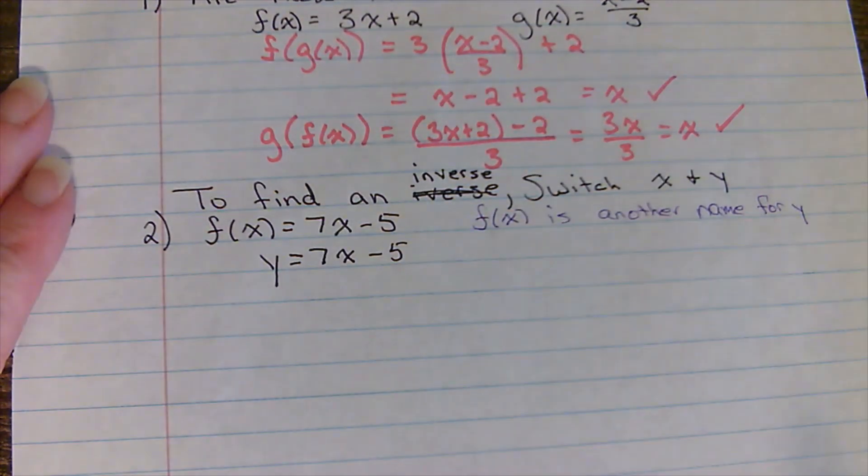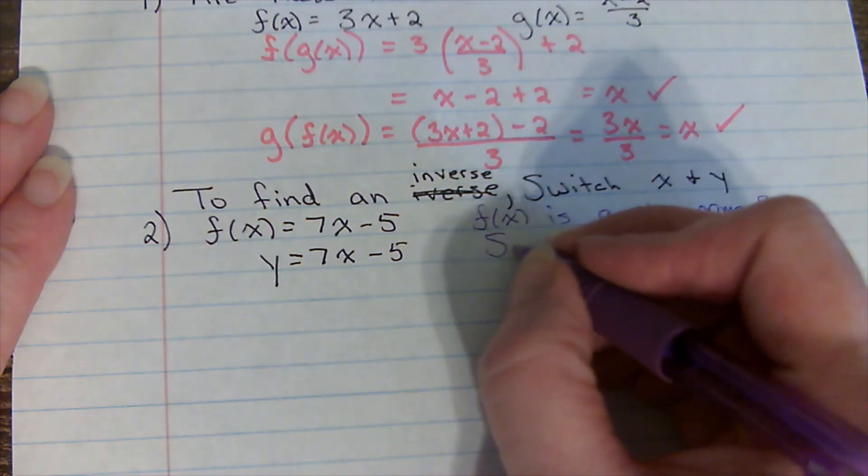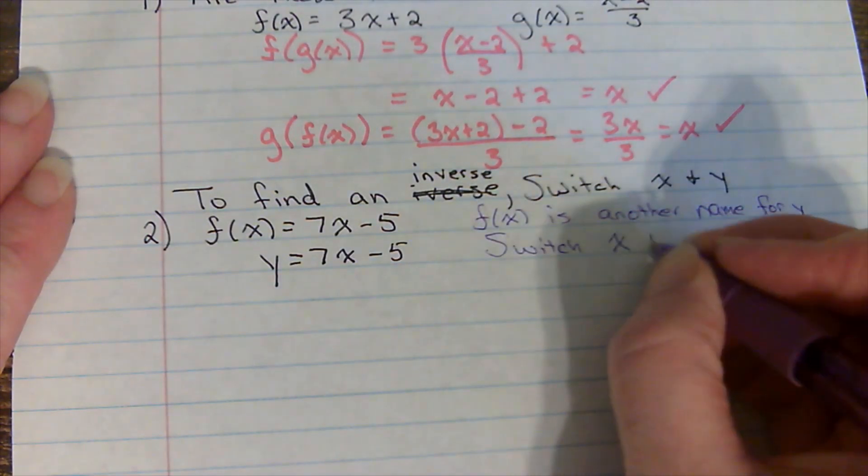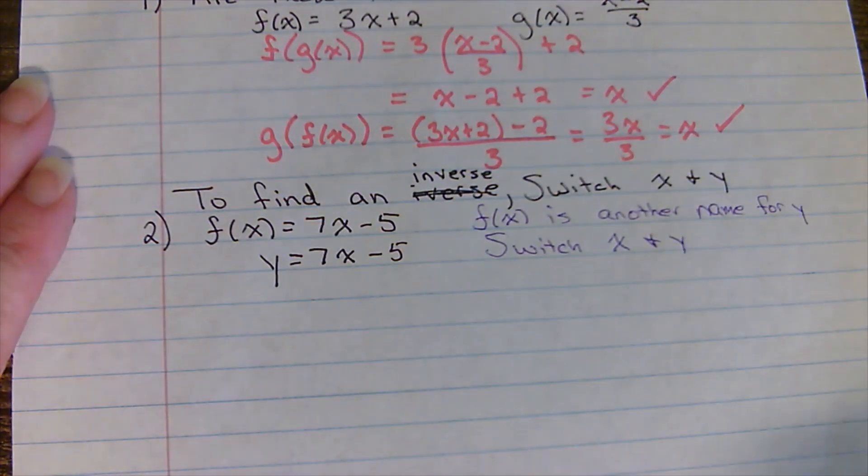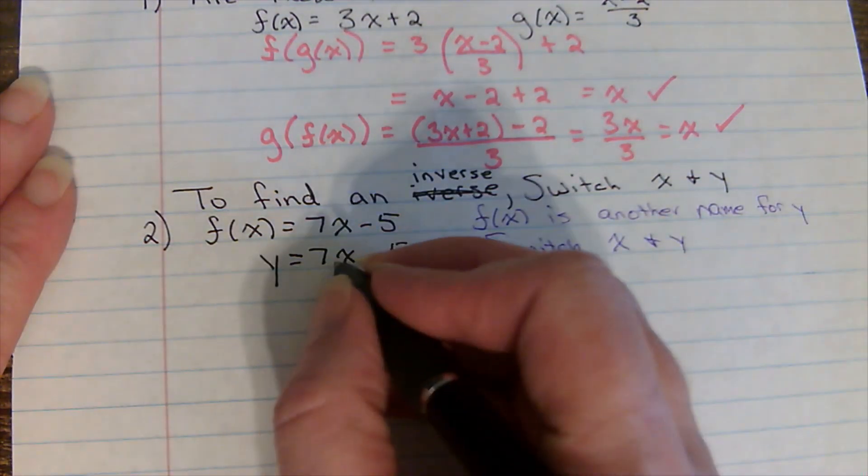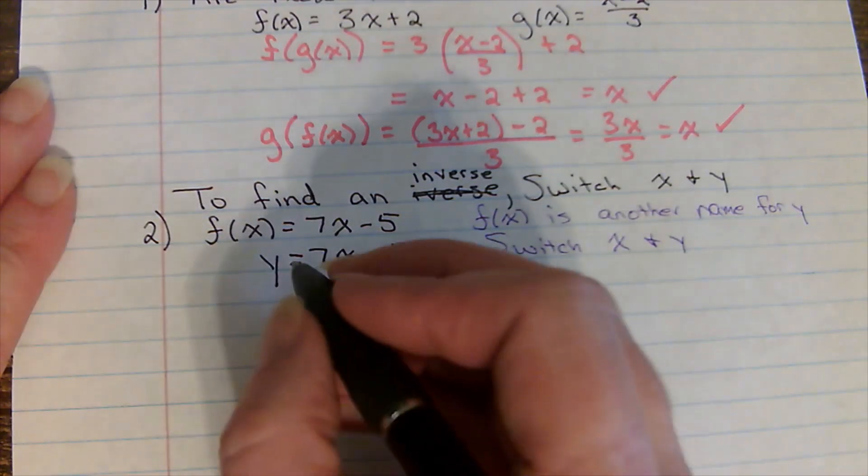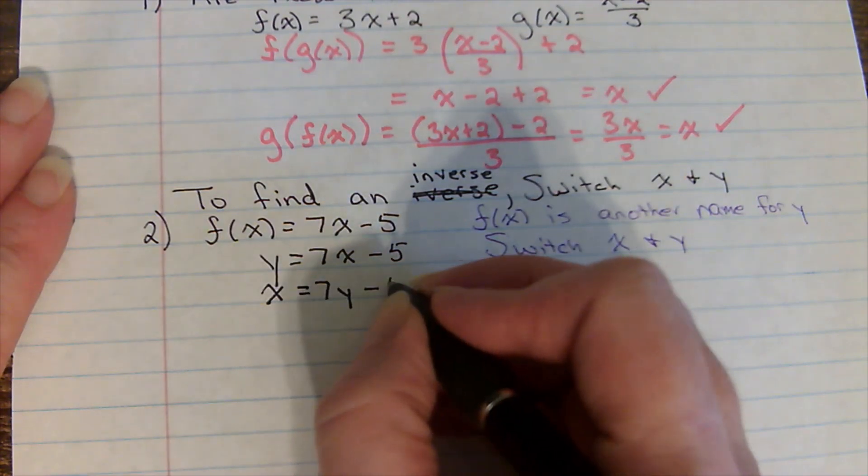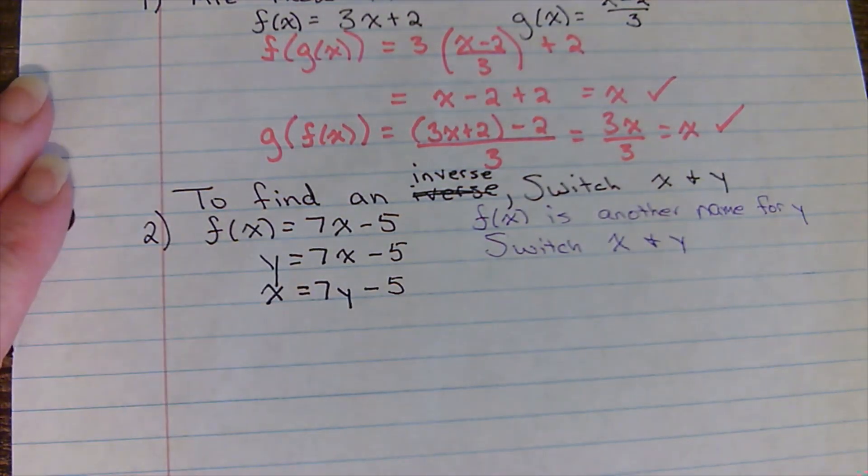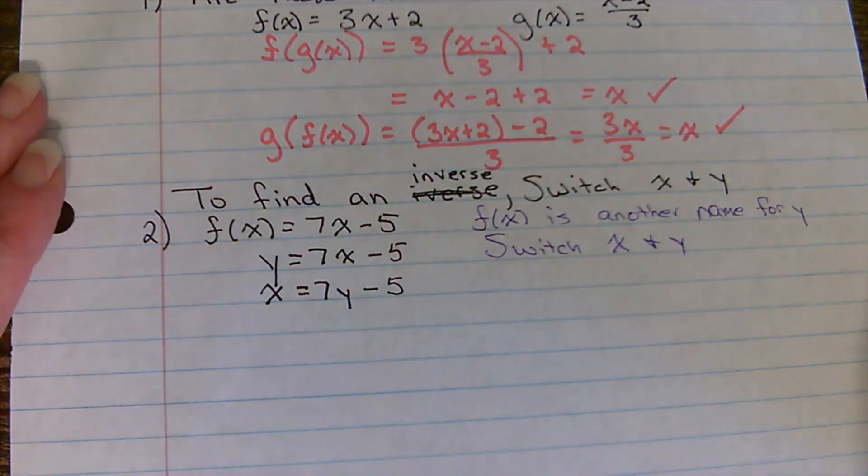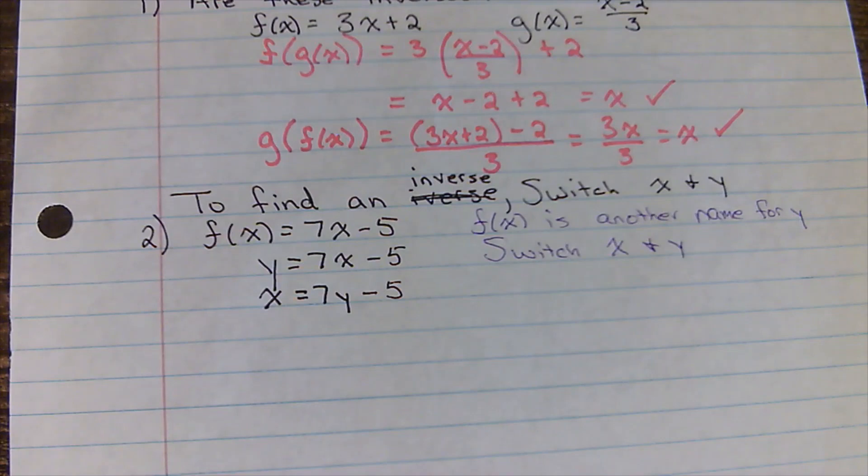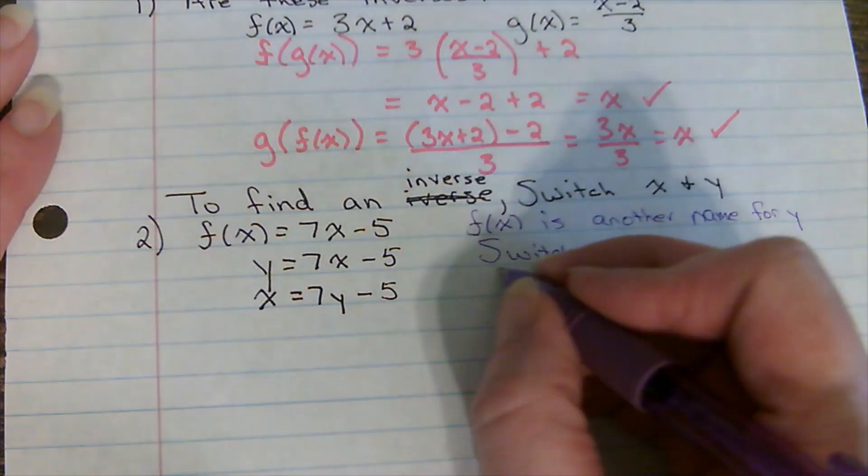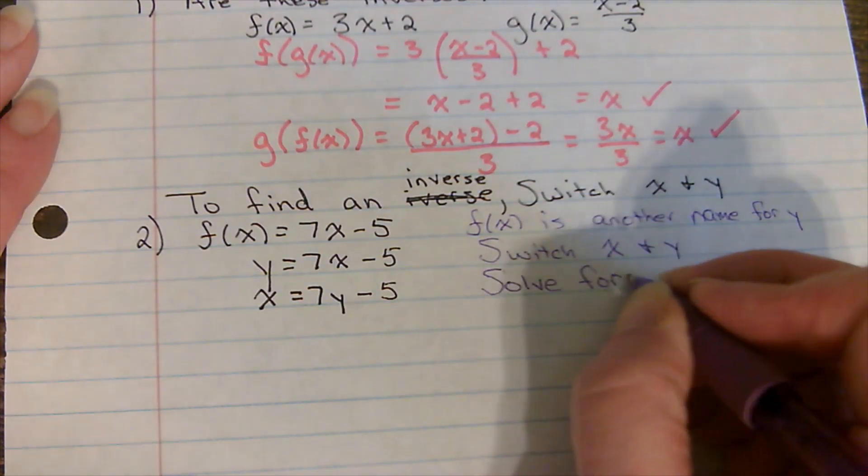I do have an x and a y, and I'm allowed to switch them. So we're going to switch x and y. You're literally going to switch their locations. So the seven, the minus five, the equal sign, everything else stays put. I'm just going to put the x where y was and the y where x was. We started off in function notation, and that's very important. If I'm in function notation, I want to stay in function notation. So the first step to do that is to solve for y.